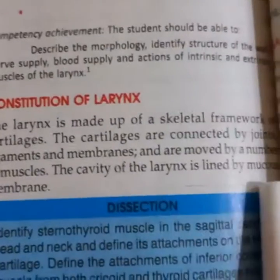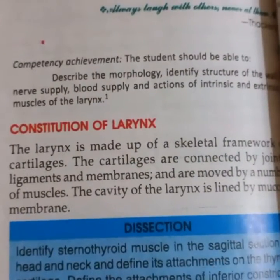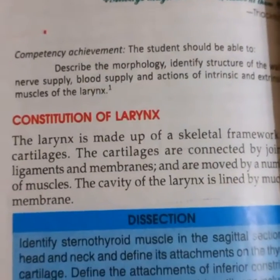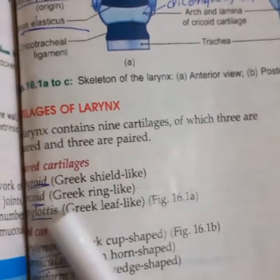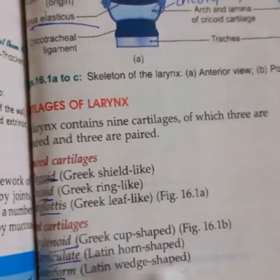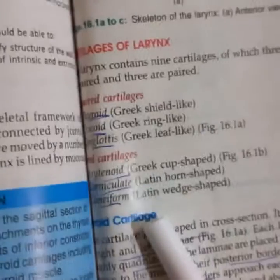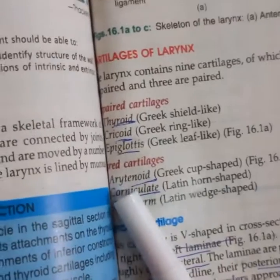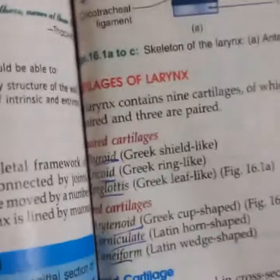The larynx structure consists of cartilages, membranes, and muscles. The cartilages of the larynx include 3 unpaired and 3 paired. The unpaired cartilages are the thyroid, cricoid, and epiglottis. The paired cartilages are the arytenoid, corniculate, and cuneiform cartilages.